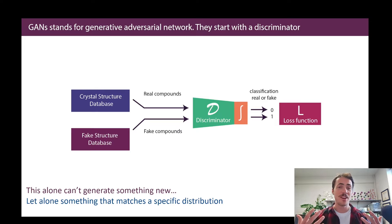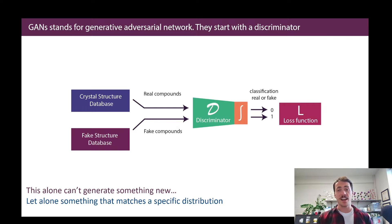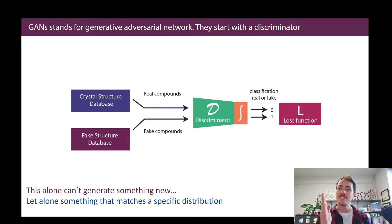It's also the reason why they are so frustrating to use — more on that later. At their simplest, they start with two different neural networks. The first is a discriminator, which is a classifier. The classifier's job is to classify things — in this case, that's a real data point and that's a fake data point. The idea is that you pass into your discriminator real samples from some sort of distribution or database.